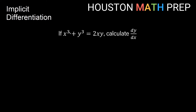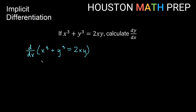Let's do another example. If we have x cubed plus y cubed equals 2xy, we want to calculate dy/dx using implicit differentiation. We'll differentiate term by term from left to right: the derivative of x cubed is just regular power rule — 3 comes out front, power goes down by one, giving 3x squared. For the next term, power rule gives 3 comes out front, power goes down by one, giving y squared, but because this has a y, the chain rule gives us times dy/dx.